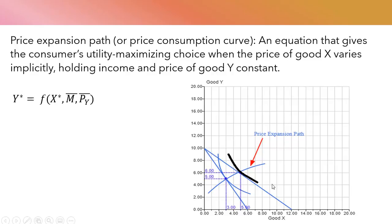Here we have a consumer first maximizing utility at this point where Y is 5 and X is 3. Here the price of good X falls, so the budget line rotates, pivots outwards, and the consumer gets on a higher indifference curve, this black indifference curve,